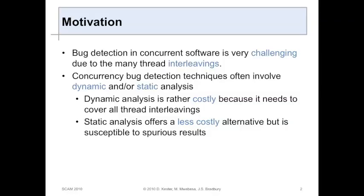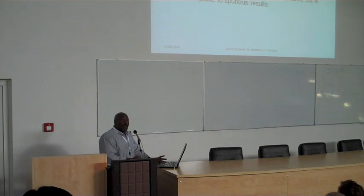What motivated us to pursue this topic? Bug detection in concurrent software is very challenging due to the many thread interleavings. For concurrency tools, they work in both static and dynamic flavors. Dynamic analysis is rather costly because it has to test every single thread interleaving. Static analysis offers a less expensive alternative, but as you probably know, is susceptible to lots of false positives, or spurious results.